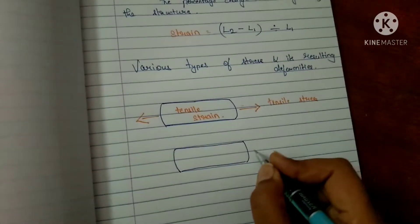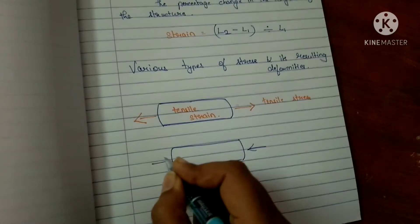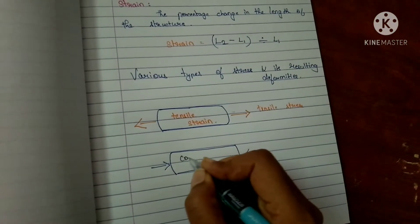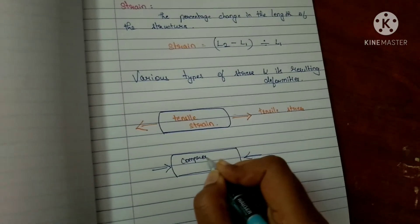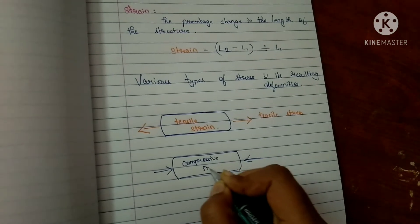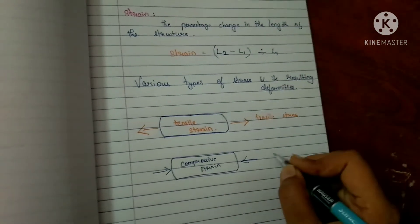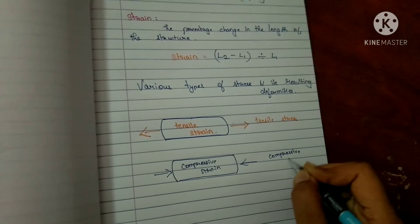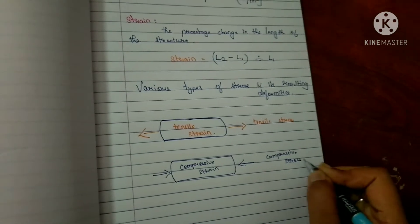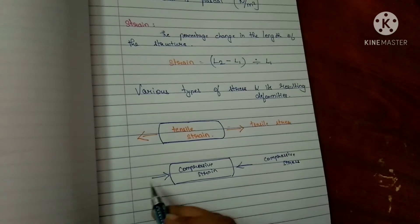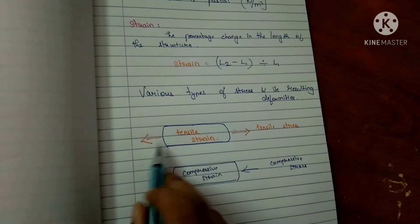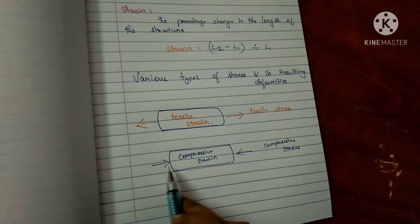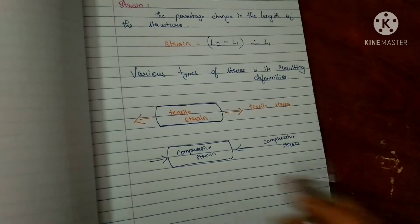Tensile stress creates tensile strain. If two forces are acting in the same line but towards each other, it creates a compressive strain, and this stress is called compressive stress. So in tensile strain, forces are opposite to each other, while in compressive strain, forces are directed towards each other.